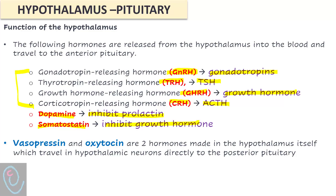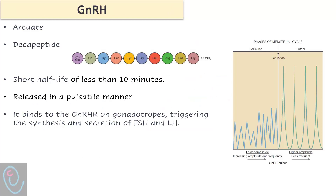The two hormones of the posterior pituitary — vasopressin and oxytocin — are formed in the hypothalamus and stored in the posterior pituitary, only released from there. Regarding GnRH, it is released from the arcuate nucleus. It is a decapeptide, meaning it is formed of 10 amino acids. It has a short half-life — less than 10 minutes; in fact, 2 to 4 minutes.